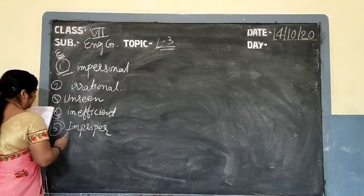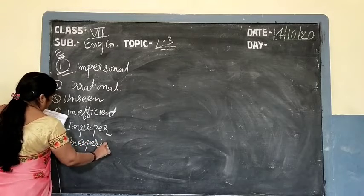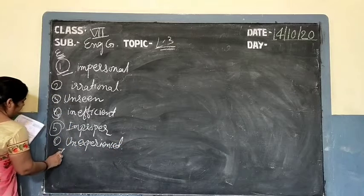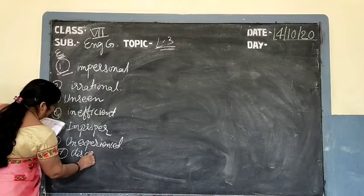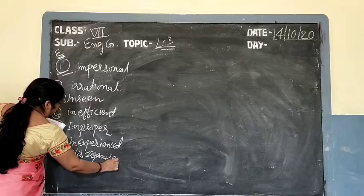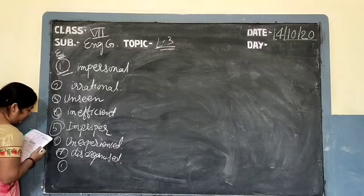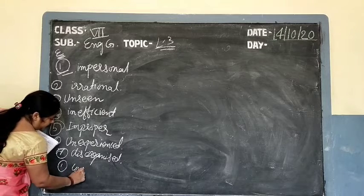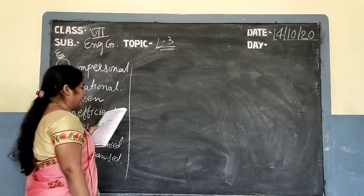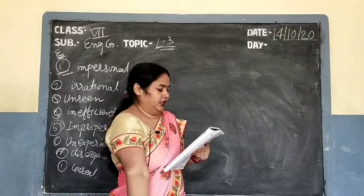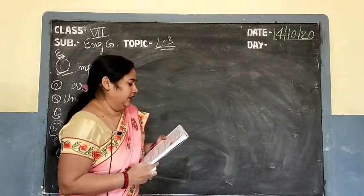Continuing opposites: 'experienced' — what will it become? Unexperienced. Number 7: 'organized' — disorganized. 'Real' — unreal. 'Discipline' — indiscipline. And 'material' — what will it become? Immaterial.